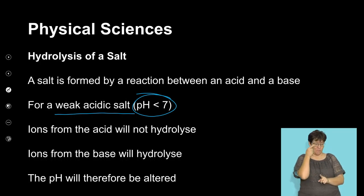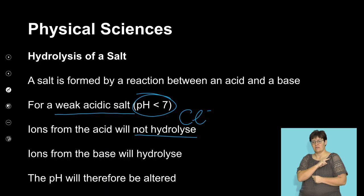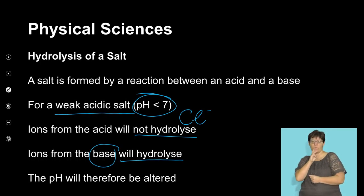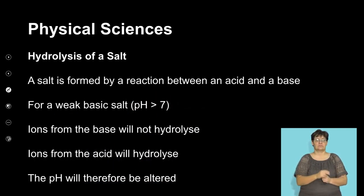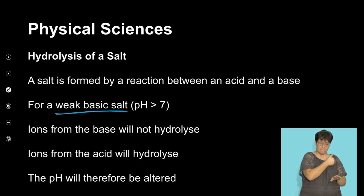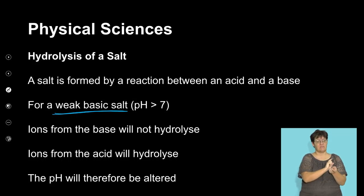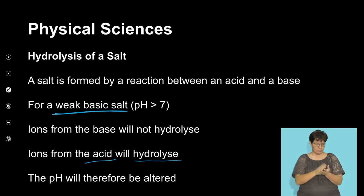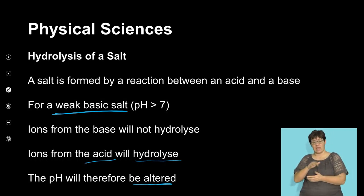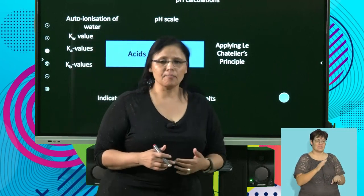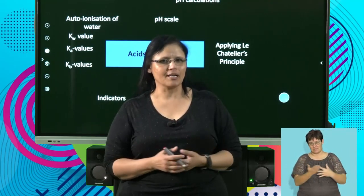A salt formed by a reaction between a strong acid and a weak base will have a weak acidic pH — smaller than 7. The ions from the acid will not hydrolyze, but the ions from the base will hydrolyze and that will alter our pH. For a salt formed by a strong base and a weak acid, meaning a pH bigger than 7, the ions from the base will not hydrolyze, but the ions from the acid will hydrolyze and alter our pH. For that reason, a strong base and a weak acid will form a weak basic salt.